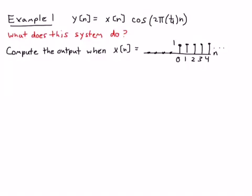So what does this system do? Well, we'd call it a modulator because it's multiplying the input sequence by a cosine. Okay, so now what we'd like to do, just to see an example of how this system works, is to calculate the output when the input is x[n], where I've sketched x[n] here.